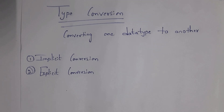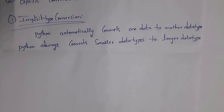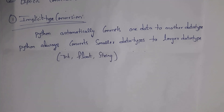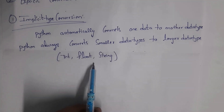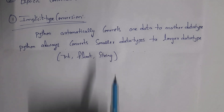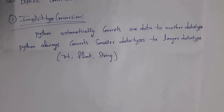The next topic is type conversion — the process of converting one data type into another. There are two types: implicit type conversion and explicit type conversion. In implicit type conversion, Python automatically converts one data type into another. Python always converts smaller data types to larger ones: int is smallest, then float, then string.